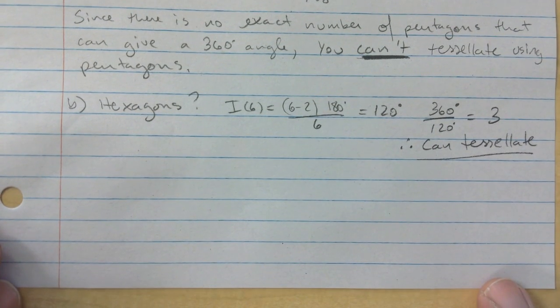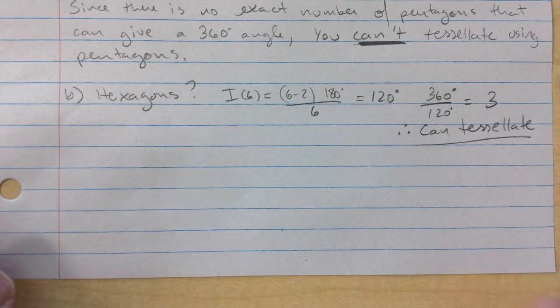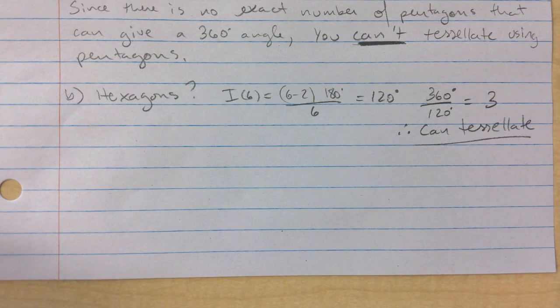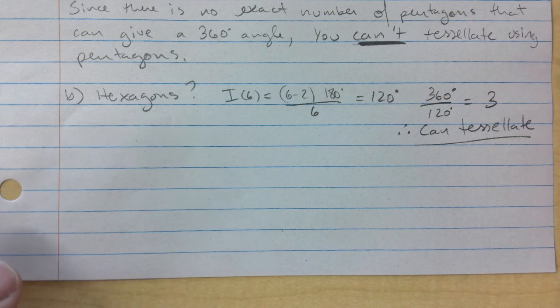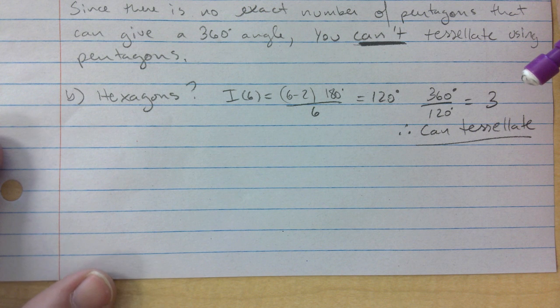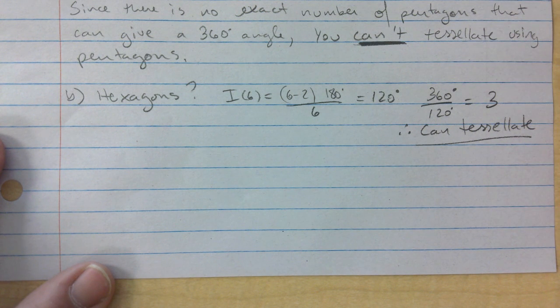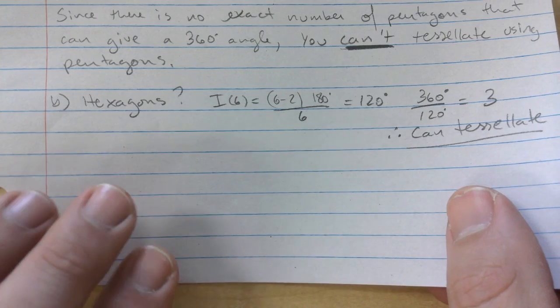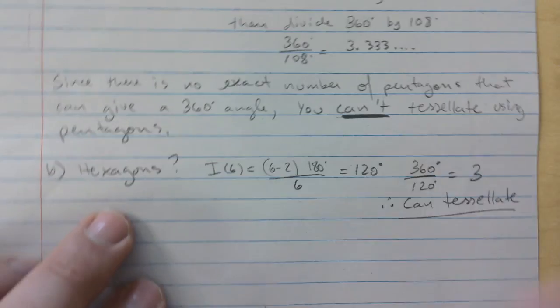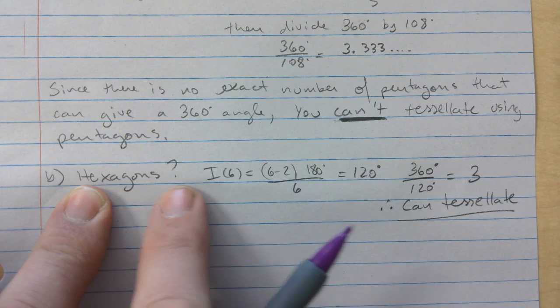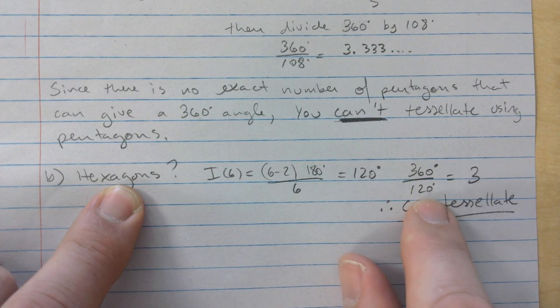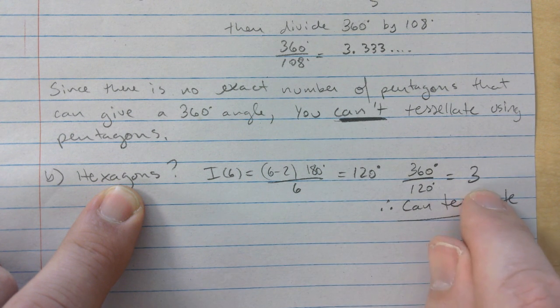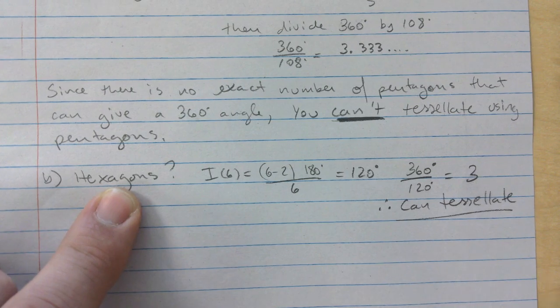And I'll give you a visual in a bit. I'll just do one more example on the back side so we have enough room. Right now it's like, what if you only had hexagons? We find the interior angle of the hexagon, we divide it and we get exactly three. If you use three every time, groups of three, it would work.